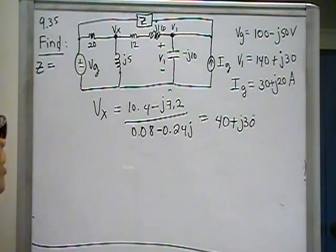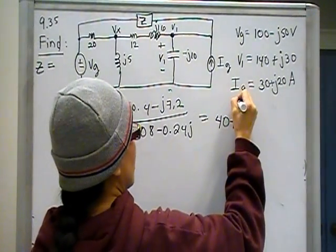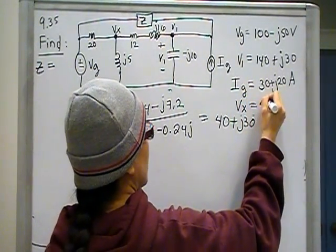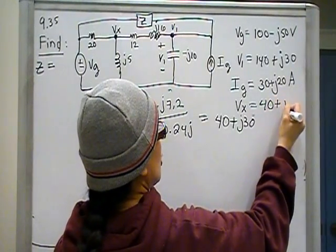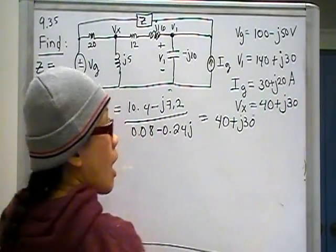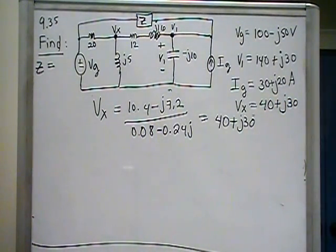So just be careful about that. This is 40 plus j30. That's another piece of information that I can use. I'm going to set that here. V sub x, that's equal to 40 plus j30. And that's what Spice told me it should be, so I believe it.